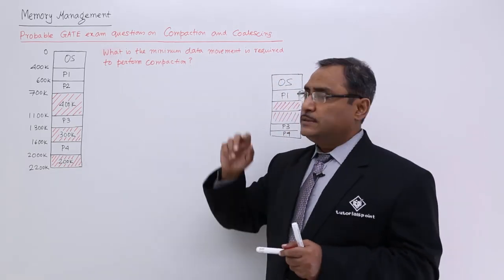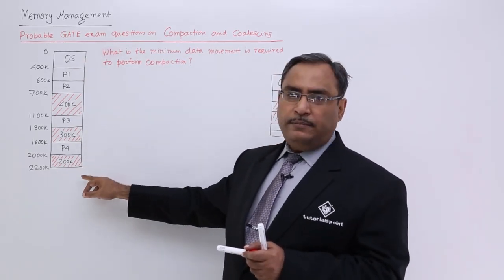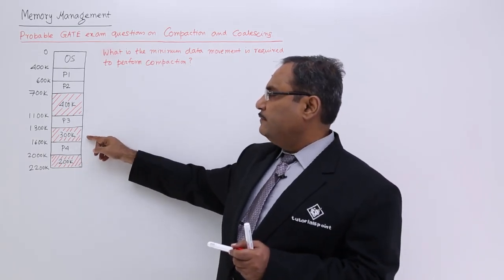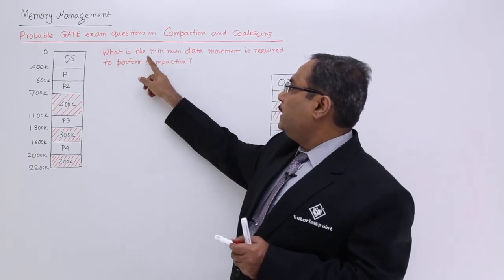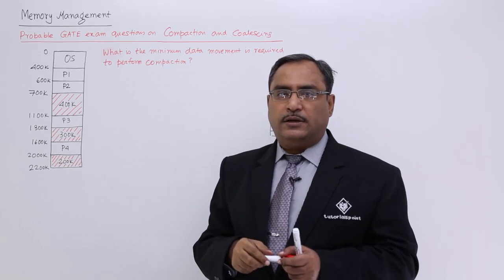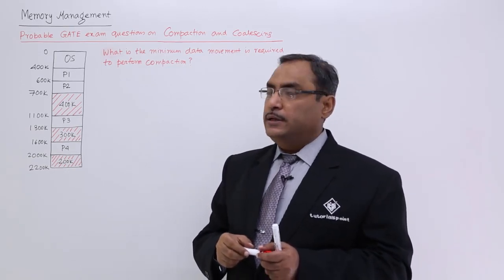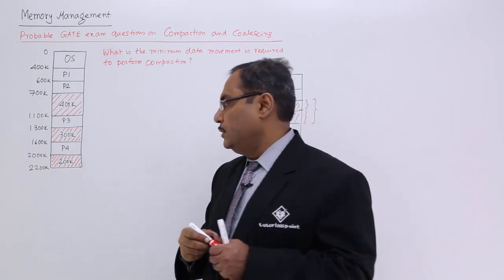Now, let me go for this problem solve. So, this is the diagram given, it is having free spaces in three different places. Now, the problem here is that, what is the minimum data movement is required to perform compaction? So, they are looking for the best solution, okay.